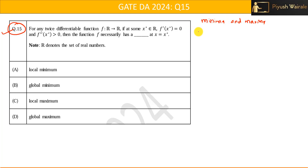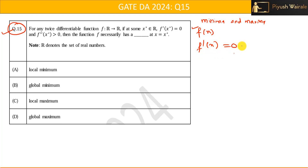For minima and maxima, suppose a function f(x) is given to us and we want to find the minimum or maximum value, or at which point the function has a minima or maxima. First we find the critical points. We take the derivative of f(x), that will be f'(x), and then we equate it to 0.